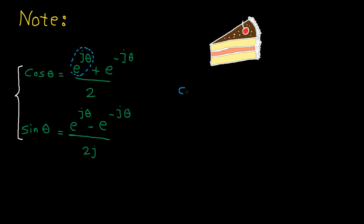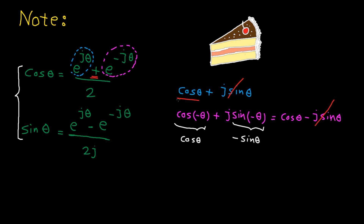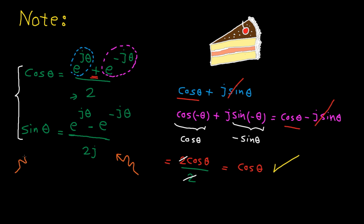...you can write e^(jθ) as cosine theta plus j sine theta, and e^(-jθ) as cosine minus theta plus j sine minus theta. From trigonometry, we know cosine(-θ) equals cosine theta and sine(-θ) equals minus sine theta. So if you add them up, the sine terms cancel out and we end up with 2 cosine theta. Dividing by 2, we get cosine theta. The proof for the sine formula is very similar, so please do it yourself to practice.